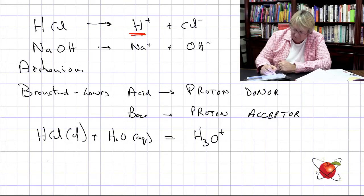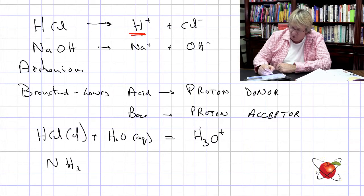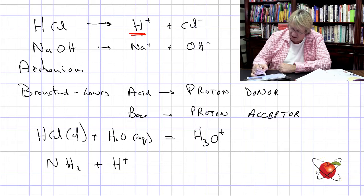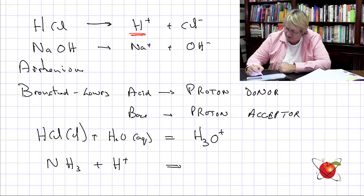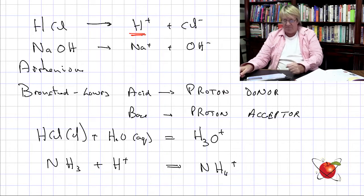Similarly with ammonia NH₃ — this one also accepts that proton and we end up with NH₄⁺. You can see the process of protons being donated to certain other molecules or species. That's a term you'll see in some texts and exams — the concentration of a species, such as the concentration of H₃O⁺ or Cl⁻ ions.